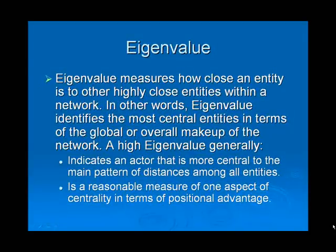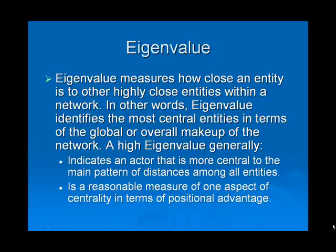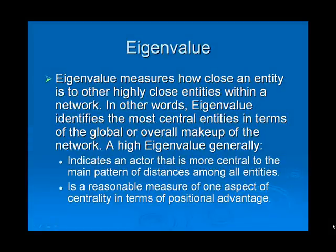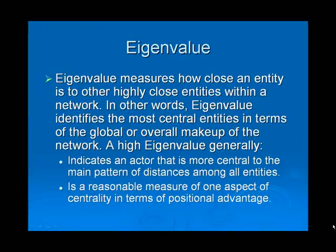Eigenvalue is perhaps one of the most interesting social network analysis values. It measures how close an entity is to other highly close entities within a network. In other words, Eigenvalue identifies the most central entities in terms of the global or overall makeup of the network. A node with a high Eigenvalue generally indicates an actor that is more central to the main pattern of distances among all entities. It's also a reasonable measure of one aspect of centrality in terms of positional advantage. We like to think of Eigenvalue as: show me the highly valuable players who are linked to other highly valuable players within the network.